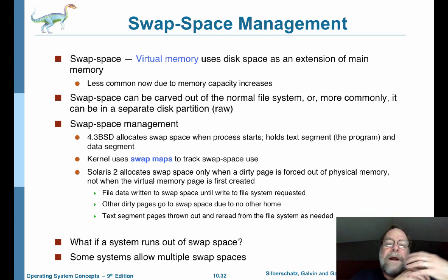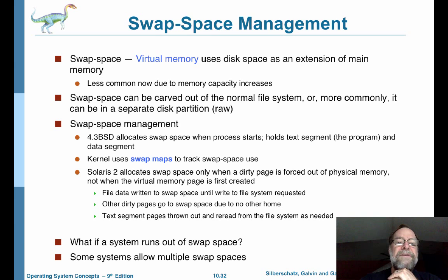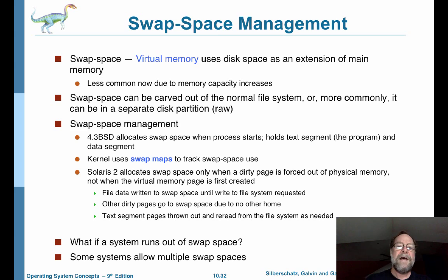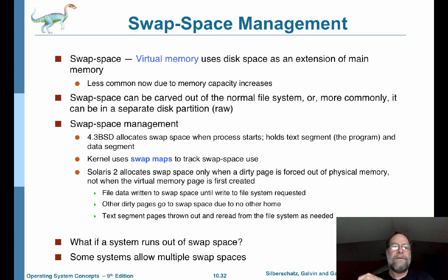Another thing hard drives are commonly used to support is virtual memory, which we talked about in the previous chapter. If you're going to do virtual memory, you need a place to swap your pages to and from the hard drive. That's a special-purpose use of the hard drive, because you're typically swapping fixed-sized chunks — a page — from a frame onto the hard drive.